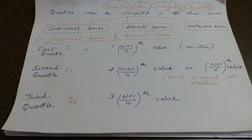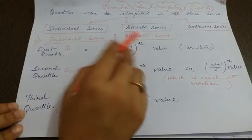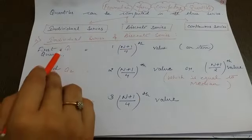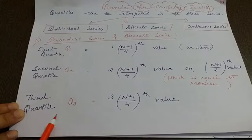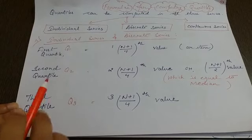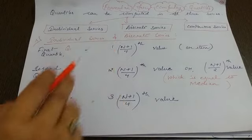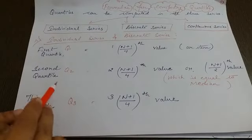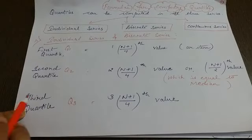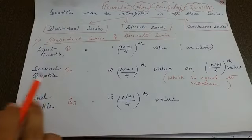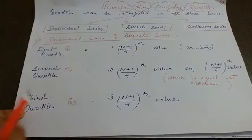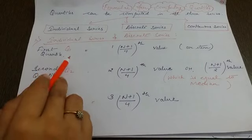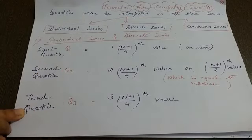Because in individual and discrete series, the formula used for first quartile, second quartile, and third quartile is the same. So in this same formula, we have calculated the value of first quartile, second quartile, and third quartile.